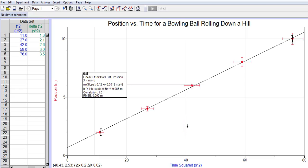So I've got the best fit line for my linearized graph of position versus time squared, but I still don't have a maximum slope line and a minimum slope line. So I want to show you how to put those in.